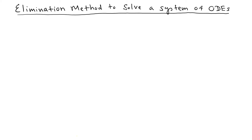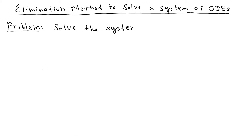Let's learn how to solve a system of ODEs using the elimination method. The system we consider is: x prime equals 6y, and y prime equals x minus 1. This is the system we're going to solve.